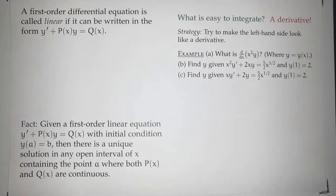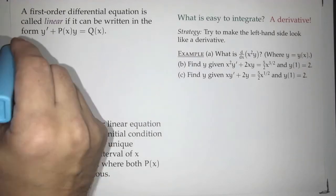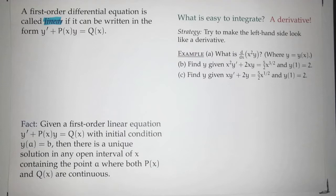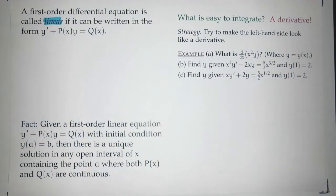So we're going to start with terminology. Terminology is actually a good thing because it really says something like, hey, there's this interesting group of differential equations that we can put together, and there's something nice we can say about them. Usually we don't make terminology for things that aren't nice. So we say that a first-order differential equation is linear — and I'm going to highlight that word 'linear' — if it can be written in the form y' + p(x)·y = q(x), where p(x) and q(x) are arbitrary functions of x.